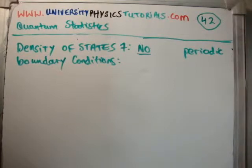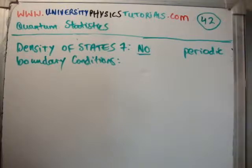In my next few videos I don't want to use periodic boundary conditions. So we need to solve the Schrödinger equation again but apply boundary conditions which are not periodic.